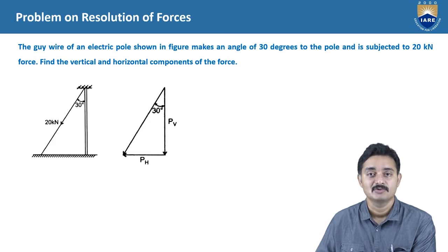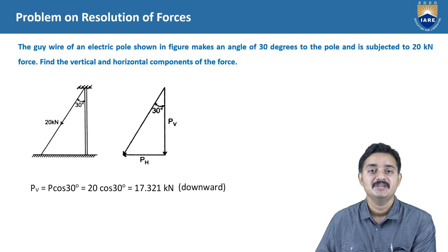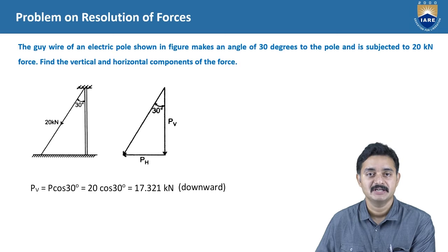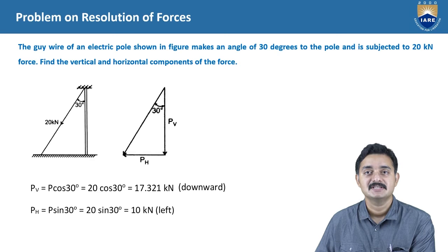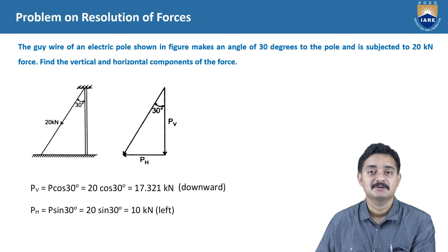From the triangle law of forces and considering the trigonometric ratios, the vertical component PV of force P is given by 20 cos 30 degrees, that is equal to 17.321 kN, which is acting in the downward direction. Similarly, the horizontal component PH is given by PH = P sin 30 degrees = 20 sin 30 degrees, that is equal to 10 kN, acting towards the left side. Thus, the component forces can be calculated.